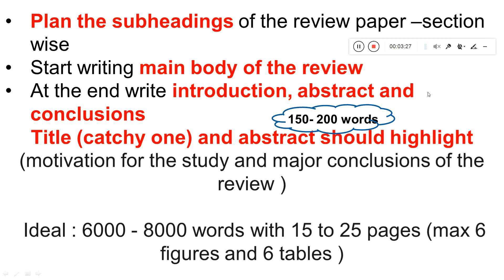Ideally a review can go from 6,000 to 8,000 words with 15 to 25 pages, with a maximum of six figures and six tables — though this may vary from journal to journal. When planning your review, please plan the figures and tables simultaneously. Check the guidelines first, fix your target journal where you want to publish, and based on that plan the appropriate number of figures and tables so you don't waste time producing more than the journal allows.